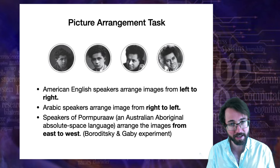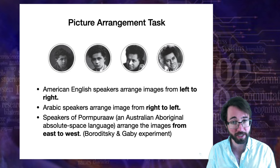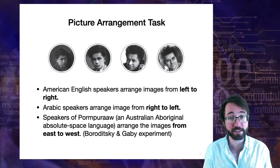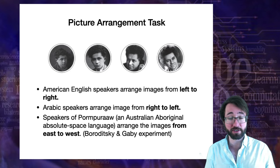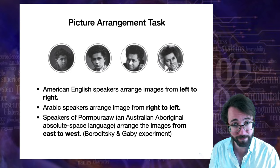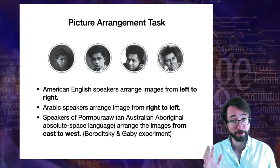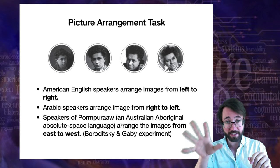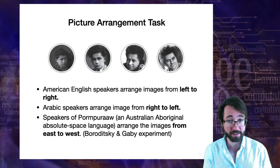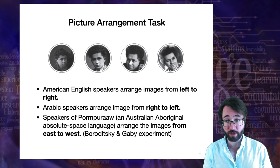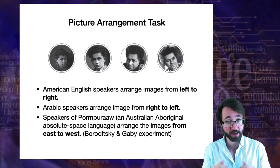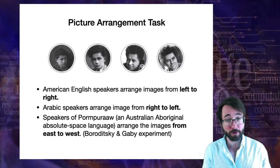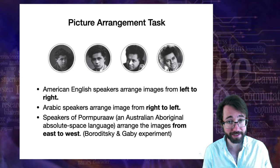How is this tested? Speakers of these different languages were given a bunch of pictures with a clear temporal sequence — for example, pictures of a person getting older. When you ask English speakers to arrange them, they do it from left to right. Arabic speakers go right to left. Pomporau speakers do it from east to west.